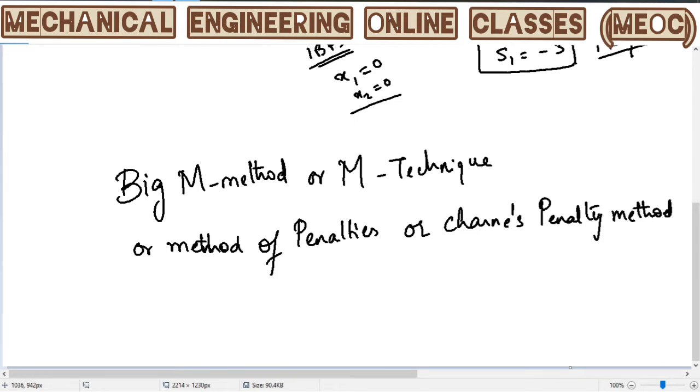These are different names of one method only. This is one artificial variable technique. And then there is another important artificial variable technique called the two-phase method. It is important that we understand why we are applying these techniques. We will see in detail what a big M method is and how the solution is obtained through that. And what two-phase method is and how to find a solution to an LPP using two-phase simplex method when artificial variables are introduced into the standard form.